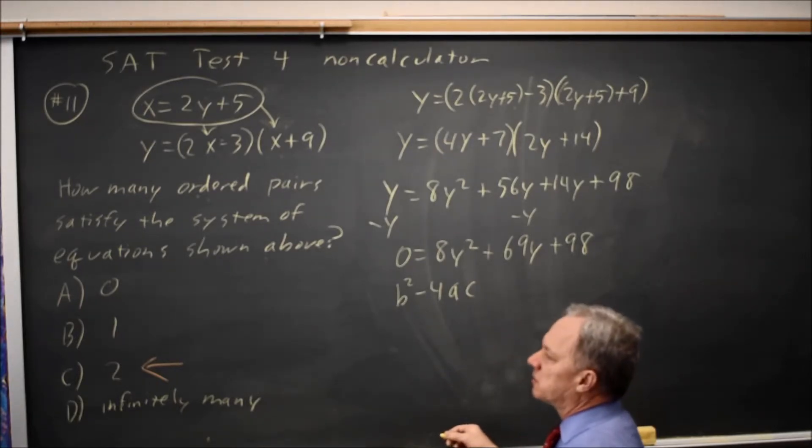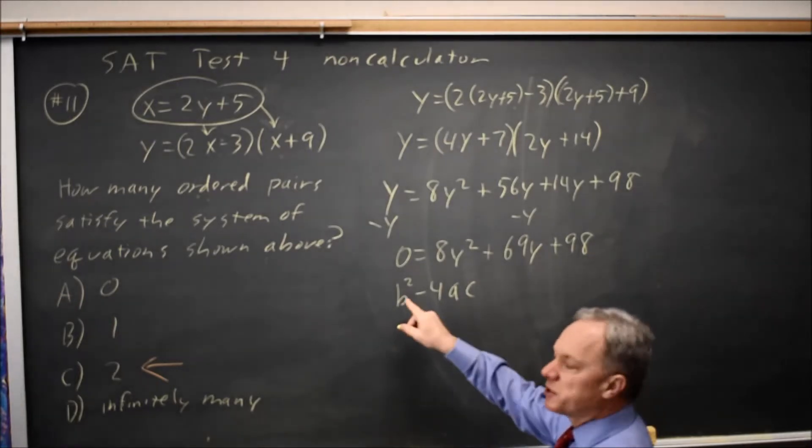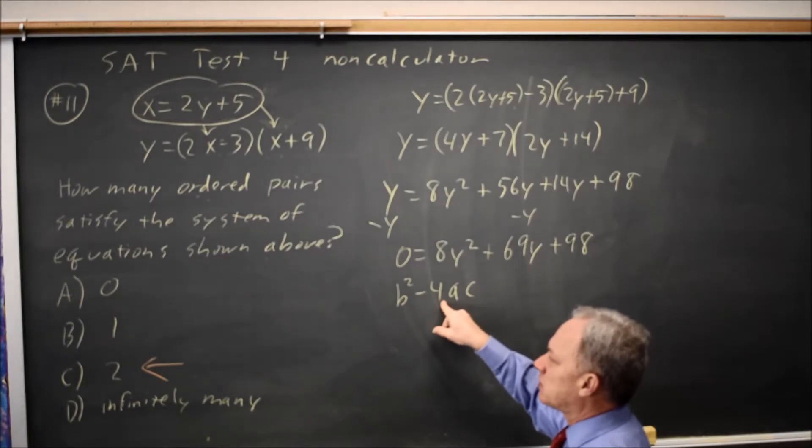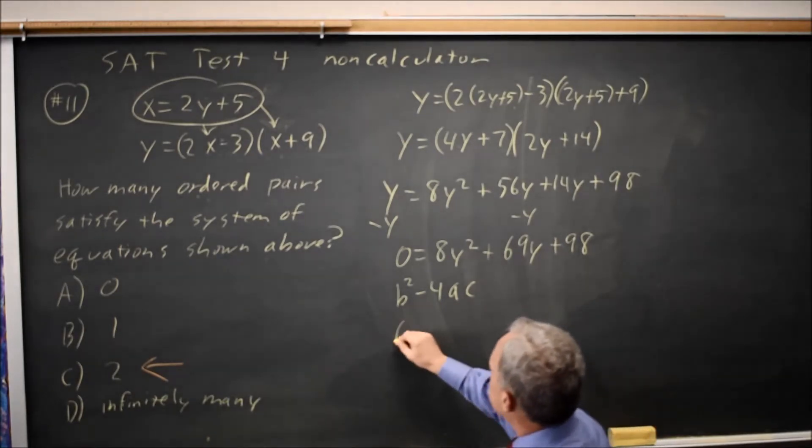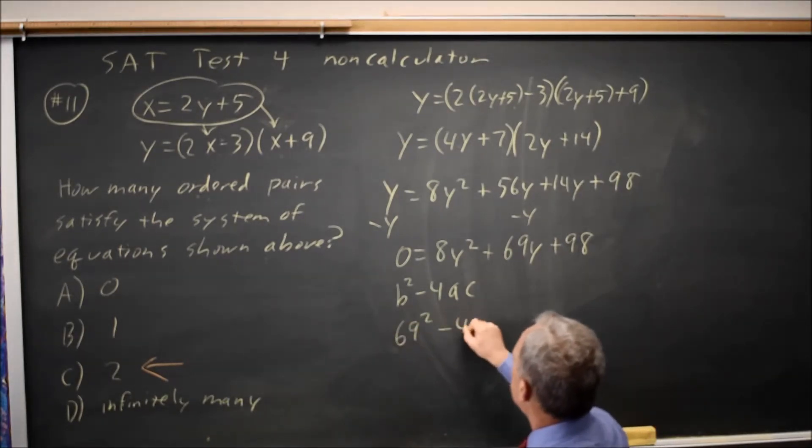If it's equal to 0, there's only one solution. And if b squared minus 4ac is negative, there are no real solutions to complex conjugate solutions. So this would be 69 squared minus 4 times 8 times 98.